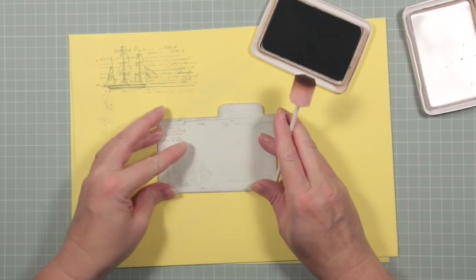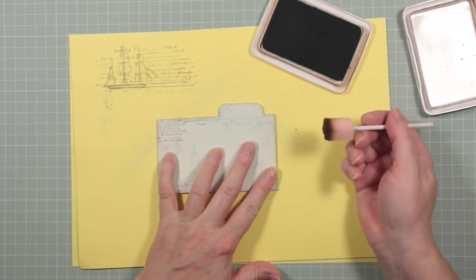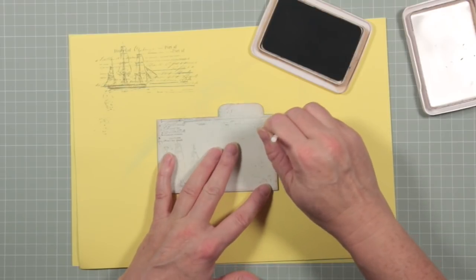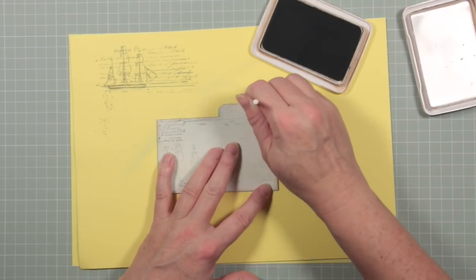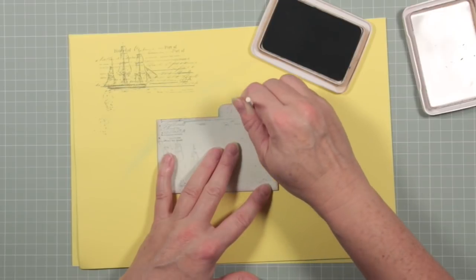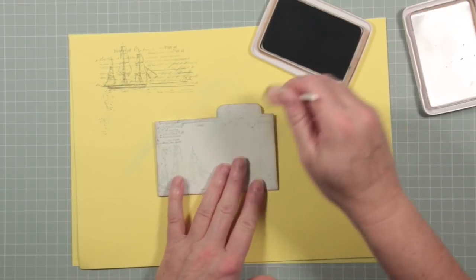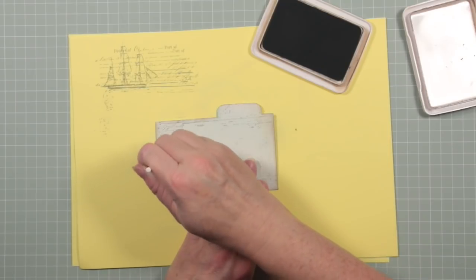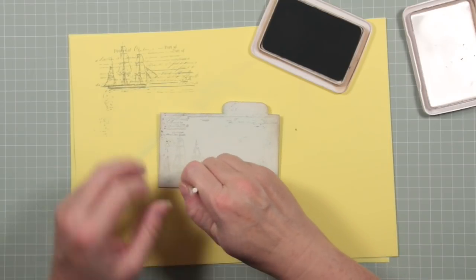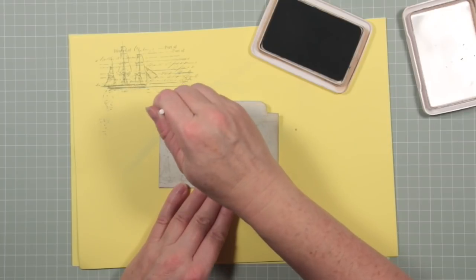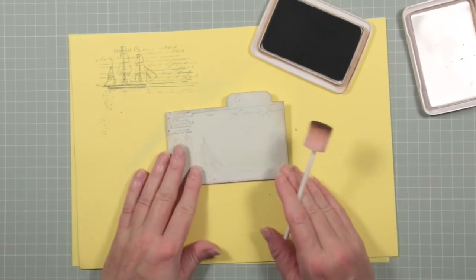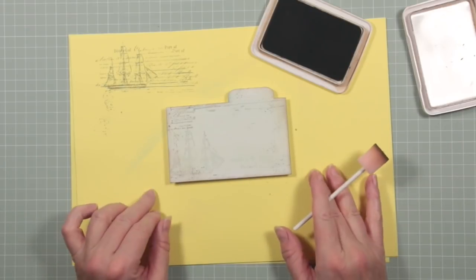I've gone around the outside so that's given the edges of my tag a nice border and I'm just going to add some stronger brown just in that top right corner and in the bottom left corner. It doesn't need this, it's just an extra nice thing to do and that's my tag finished.